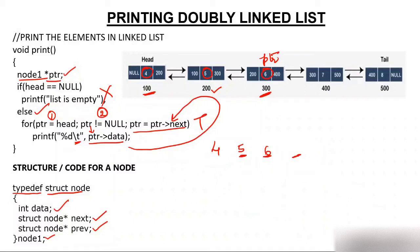Again I'll increment PTR. PTR will have PTR->next. What is PTR->next? 400. So PTR will move from this node to node 400. Again I'll check the condition: is PTR not null? Yes, PTR is not null. So I'll again print PTR->data, which is 7. So I'll print 7, and this tab will give me the space.